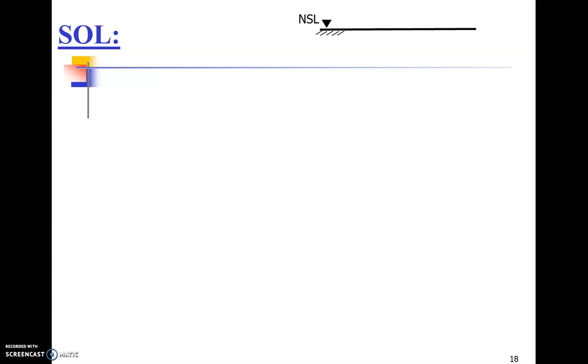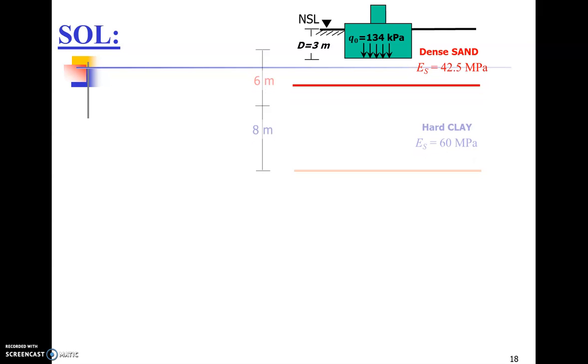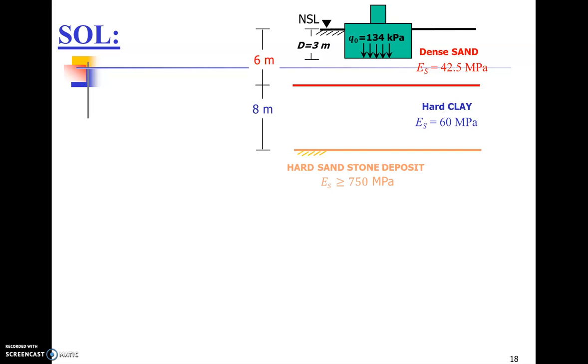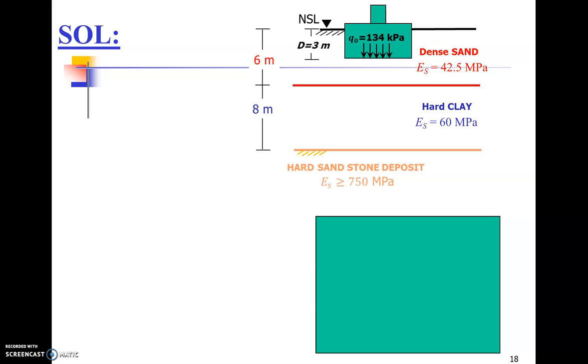The very first step is to recognize the formulas to be used, and then it is important that you should be able to draw your problem geometrically. Visualization of the problem is the key. This is our natural surface level, and that's how our foundation looks. The depth of the foundation is 3 meters, sand deposit thickness is 6 meters, then it is overlying a clay deposit of 8 meter thickness, total 14 from natural surface level. And then there's hard sandstone deposit showing the base rock.